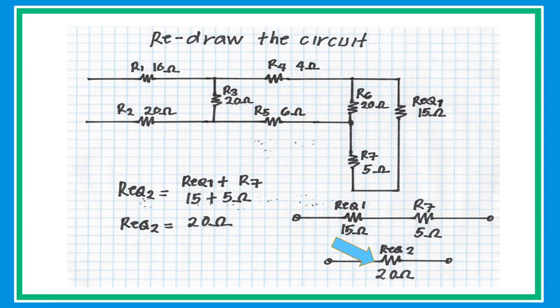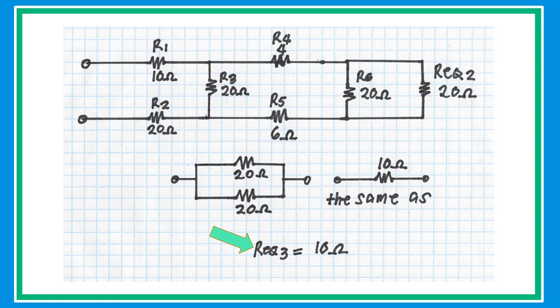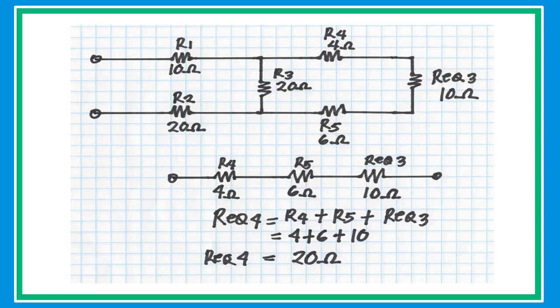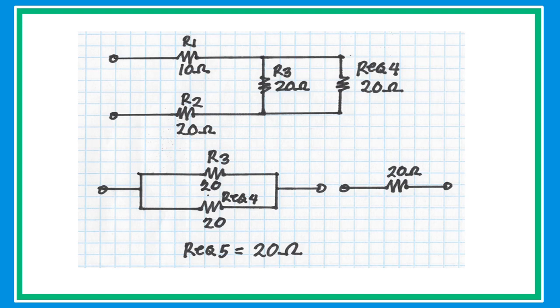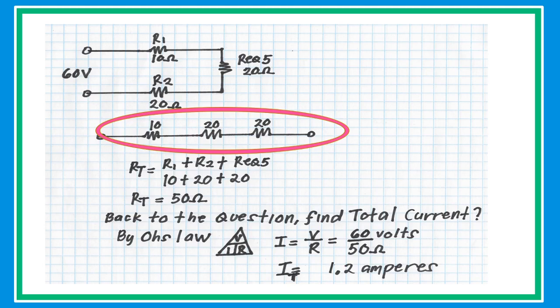Collapse the circuit and redraw again. In the new circuit, R6 (20 ohms) and R_eq (20 ohms) are in parallel with the same value, so take half to get 10 ohms. Collapse and redraw again — R4, R5, and R_eq are in series; add them to get 20 ohms. Collapse and redraw: R3 and R4 are in parallel with the same value, giving an equivalent resistance of 20 ohms. In the final simplified series circuit, R1, R2, and R_eq5 are in series — add them to get a total equivalent resistance of 50 ohms.